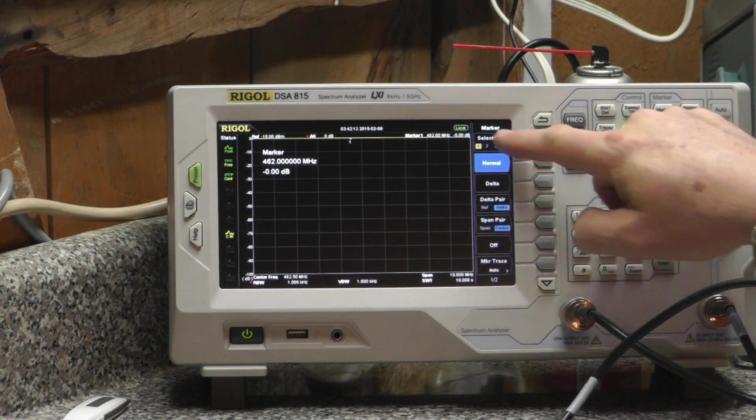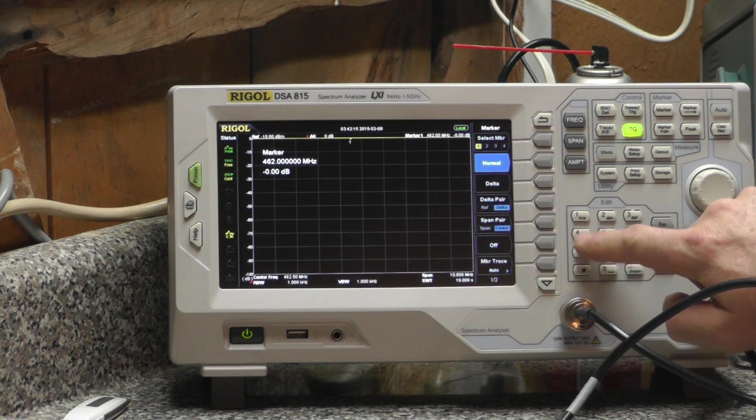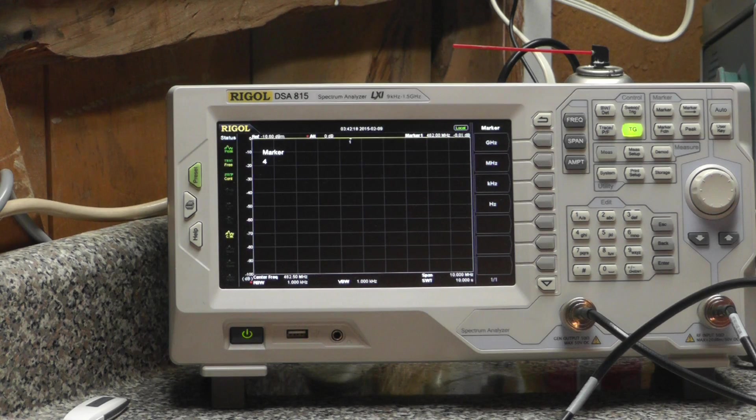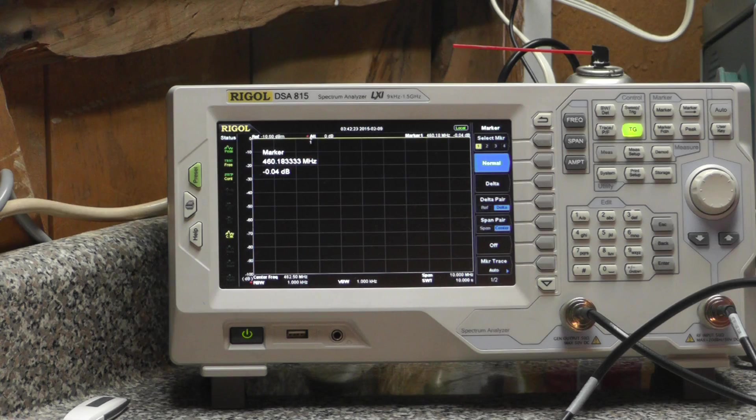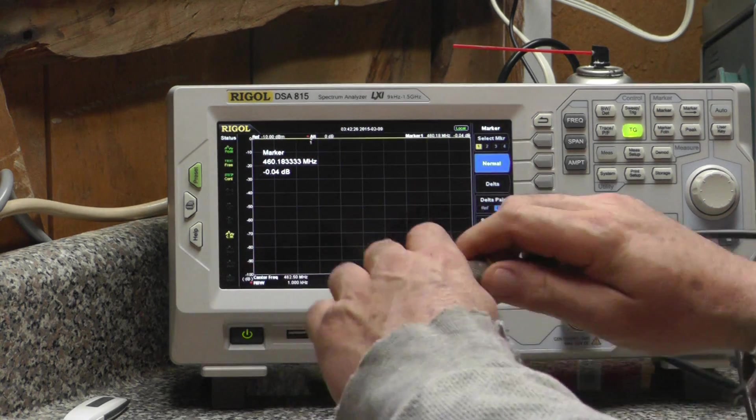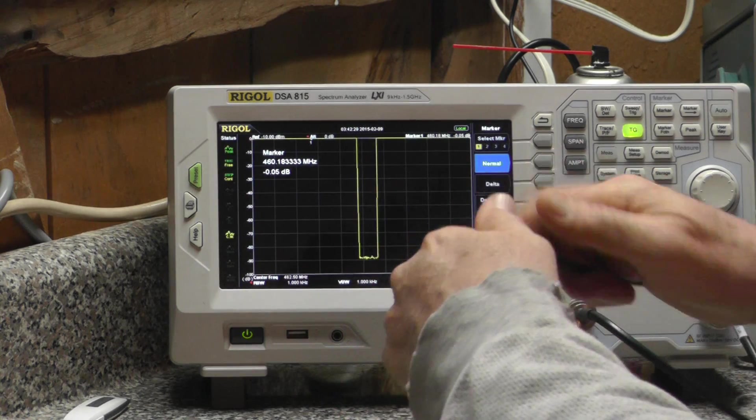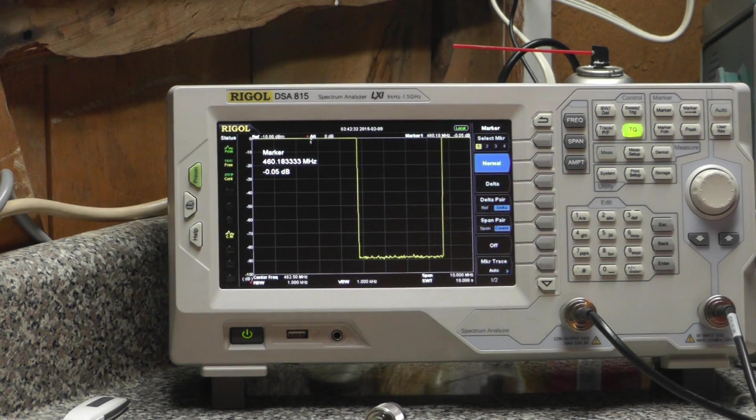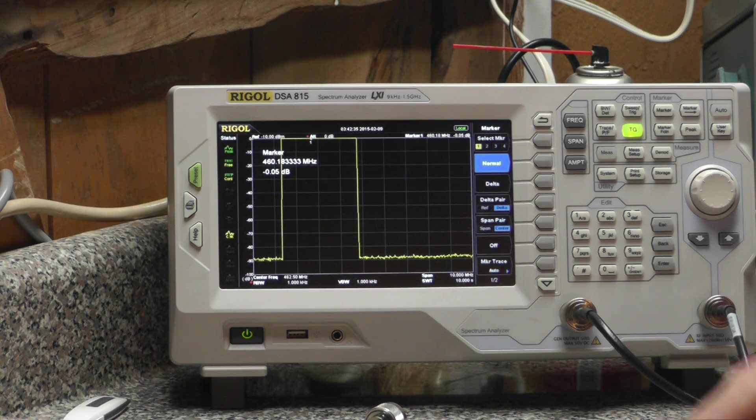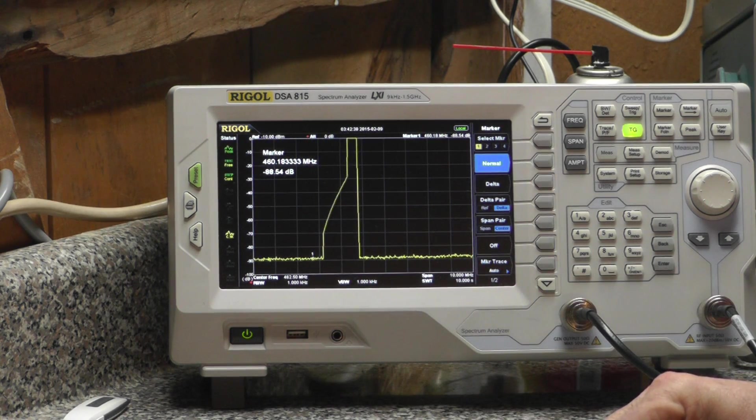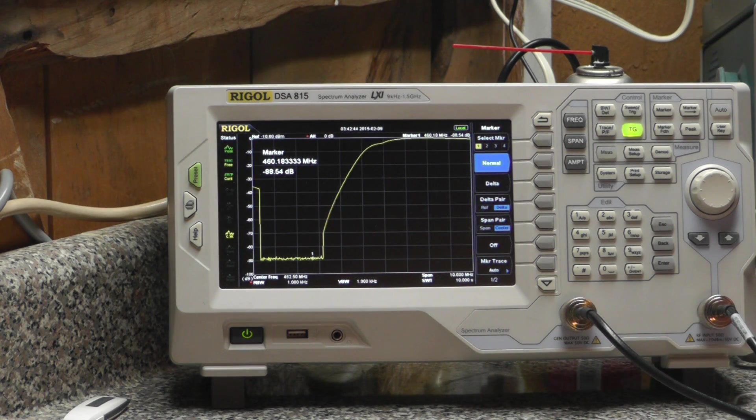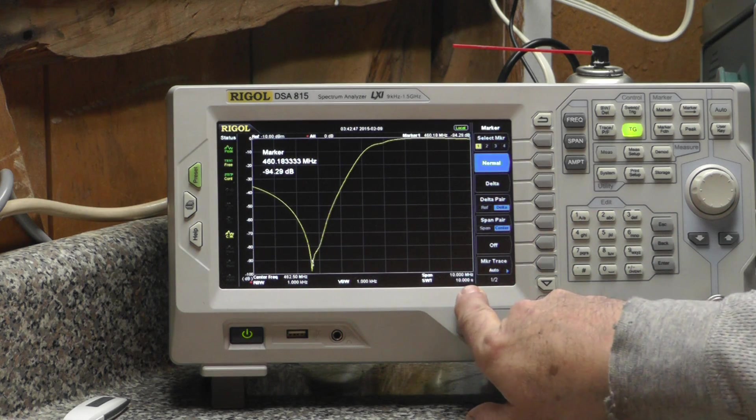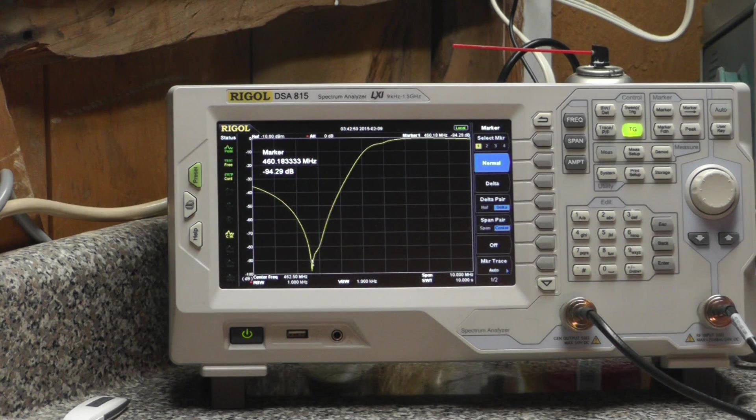We can go to marker one and put in our low frequency, which is 460.175 megahertz. I can remove the barrel connector and connect it back to the duplexer now. We're on about a 10 second sweep, showing our level right down here at minus 94.29. Maybe let it make another sweep.